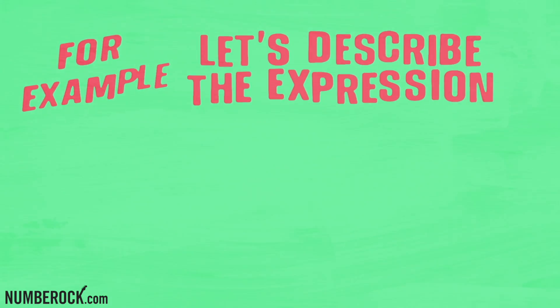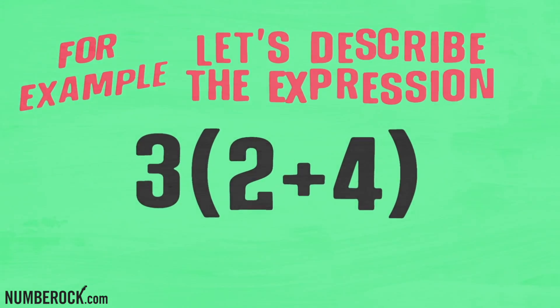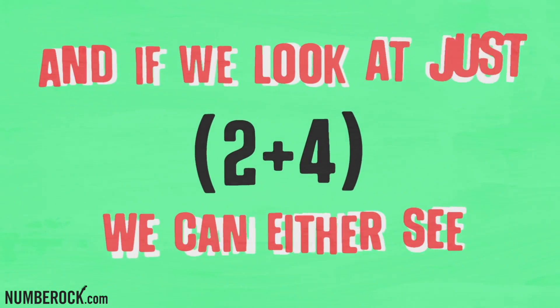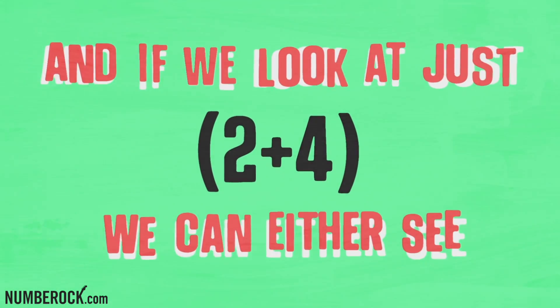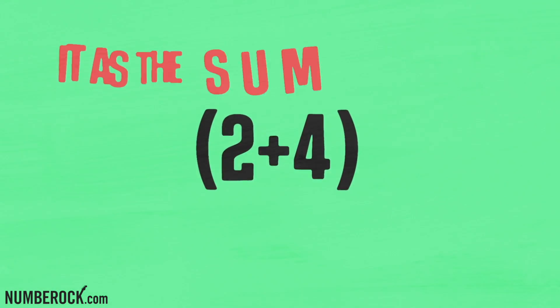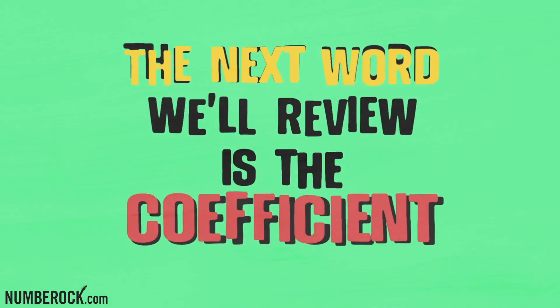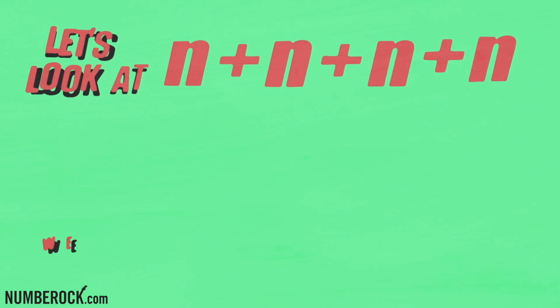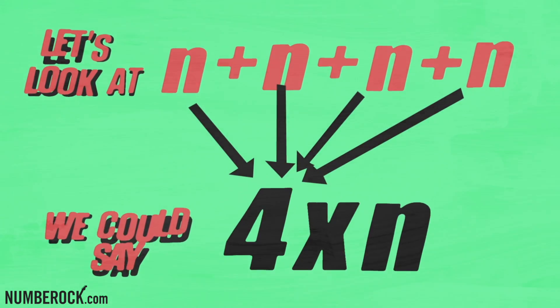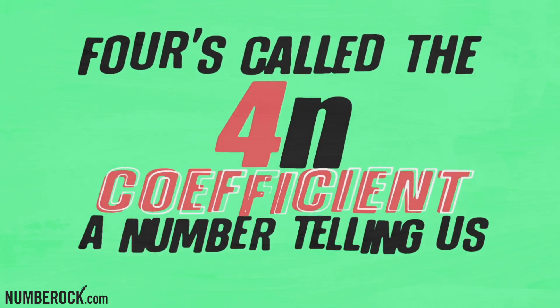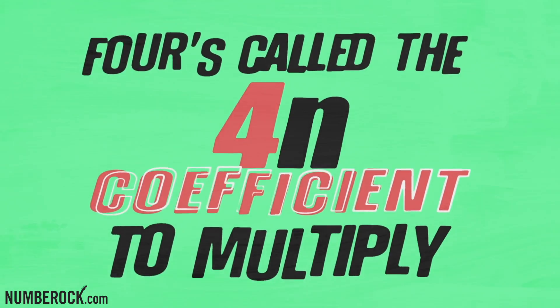For example, let's describe the expression 3 times 2 plus 4. We can describe it as the product of two factors, and if we look at just 2 plus 4, we can see it as the sum of two terms or a single entity. The next word we'll review is the coefficient. Let's look at n plus n plus n plus n — we could say 4 times n, or 4n without the sign. 4 is called the coefficient, a number telling us how many times to multiply.